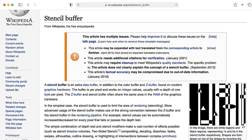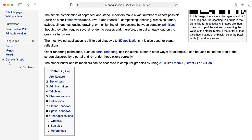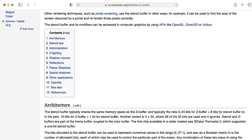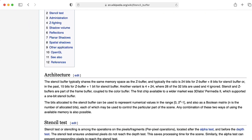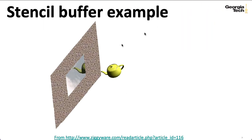So you might imagine using something like this in order to mask out the cockpit of an airplane in some sort of flight simulator when you're drawing the main external scene. So this particular notional diagram is from this Ziggyware website. Unfortunately, this website doesn't exist anymore, but you can find it on the Internet Archive. Well, at least you can find the text. It looks like the Internet Archive didn't archive the actual images.